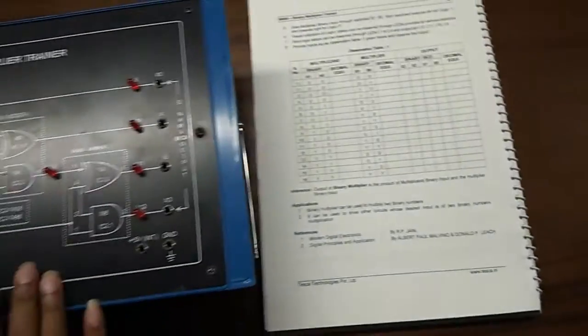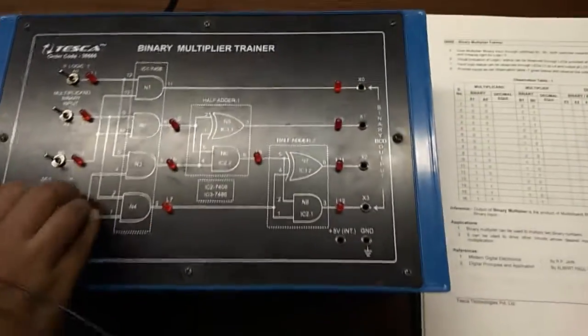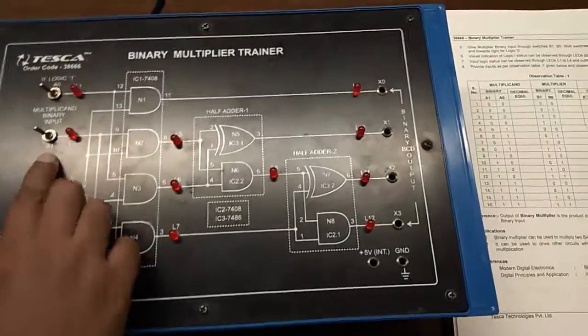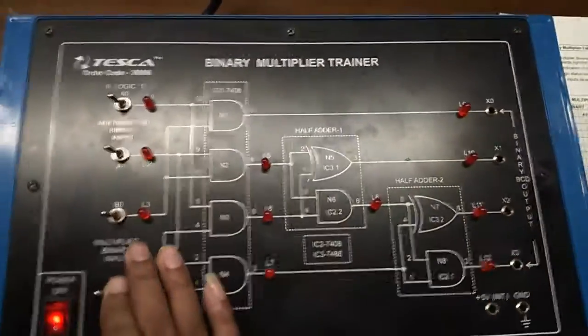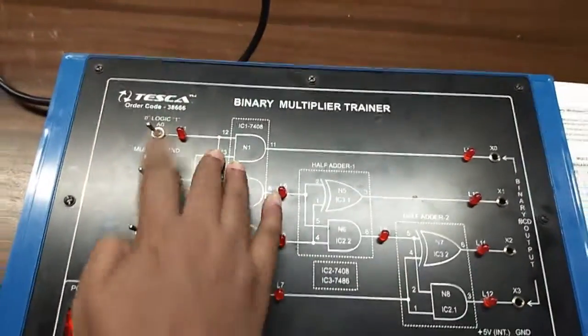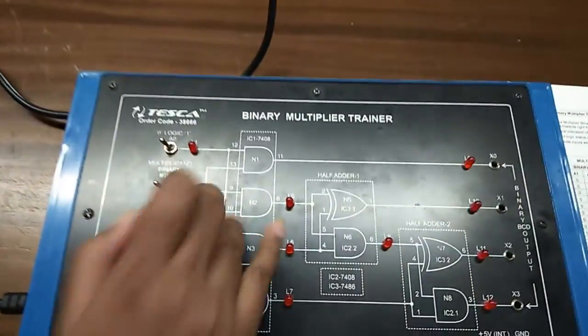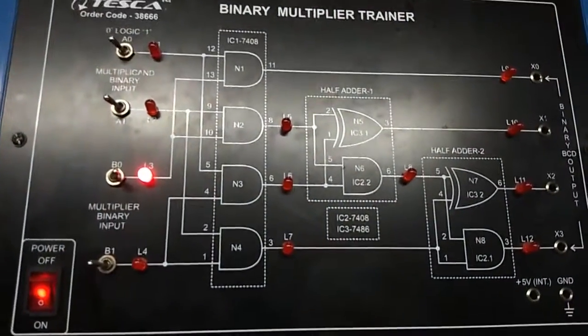First turn on the kit and first I am giving all 0 0 0 0. My outputs are 0. Now I am giving 0 0 0 1, again my output is still 0.